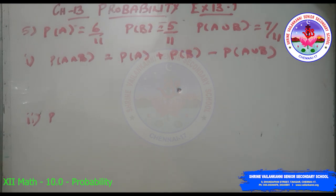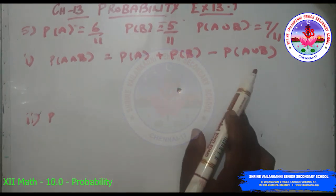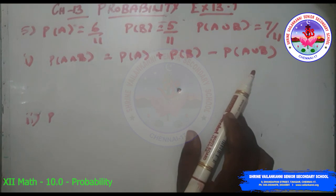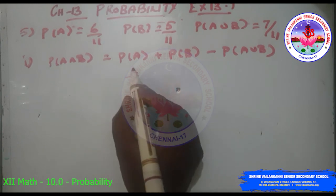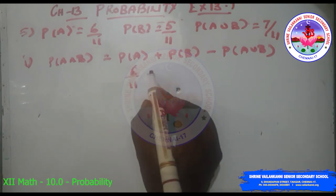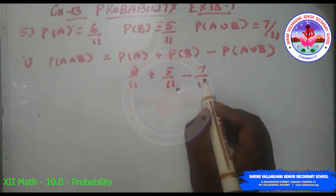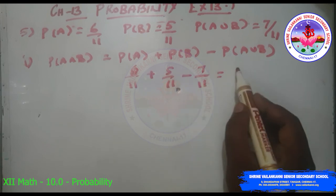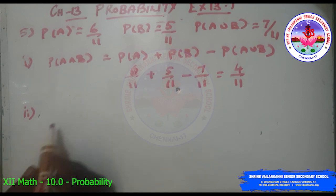Question 5: P(A) = 6/11, P(B) = 5/11, P(A∪B) = 7/11. Find P(A∩B). P(A∩B) = P(A) + P(B) − P(A∪B) = 6/11 + 5/11 − 7/11 = (6+5−7)/11 = 4/11.